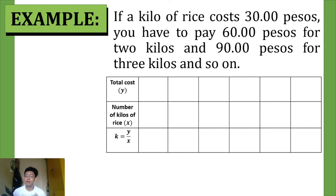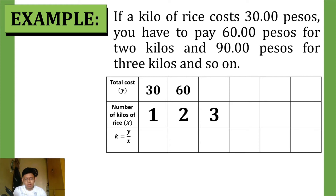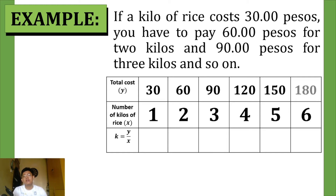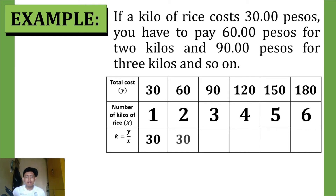The total cost will be our y variable — our dependent variable — because the price will depend on the number of kilos. Our independent variable will be the number of kilos of rice. So: 1 kilo = 30 pesos, 2 kilos = 60 pesos, 3 kilos = 90 pesos, 4 = 120, 5 = 150, 6 = 180, and so on.